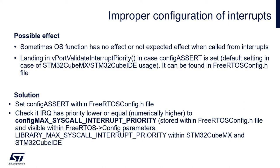The next group is below configMAX_SYSCALL_INTERRUPT_PRIORITY. Those interrupts are dedicated to fully cooperate with the operating system by calling its functions, and this is why those interrupts will be blocked by operating system critical sections. Within our code we should call operating system functions only from interrupts in this group.